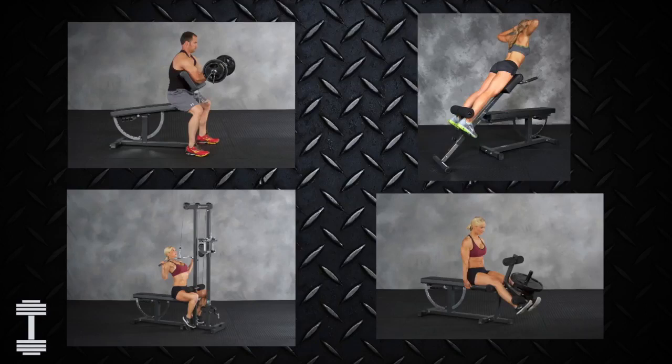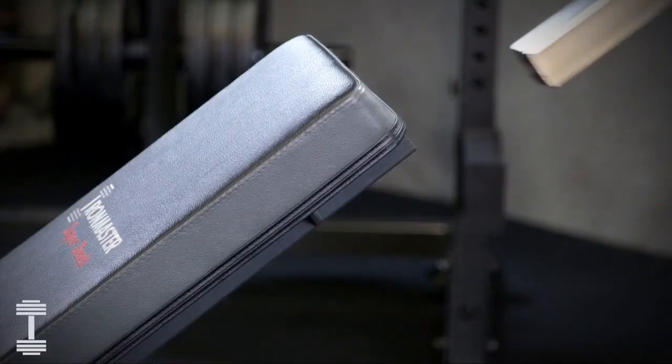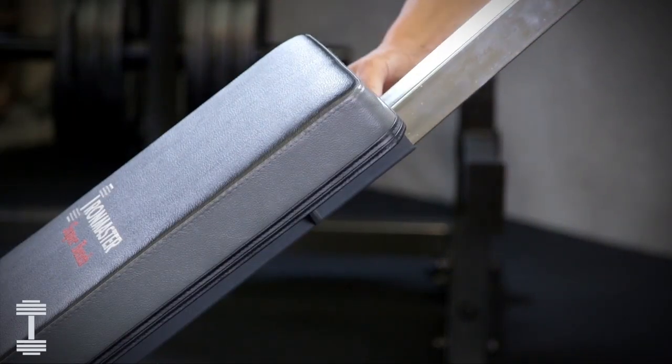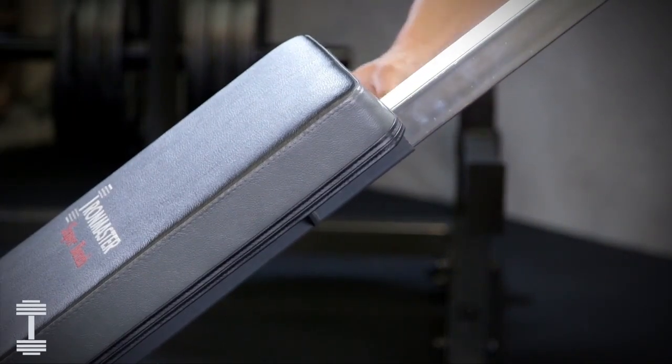There are many optional attachments available and they all install in the end of the bench with the pull pin. The chin-up attachment is easier to install with the bench at a lower angle than rotate the bench upright.